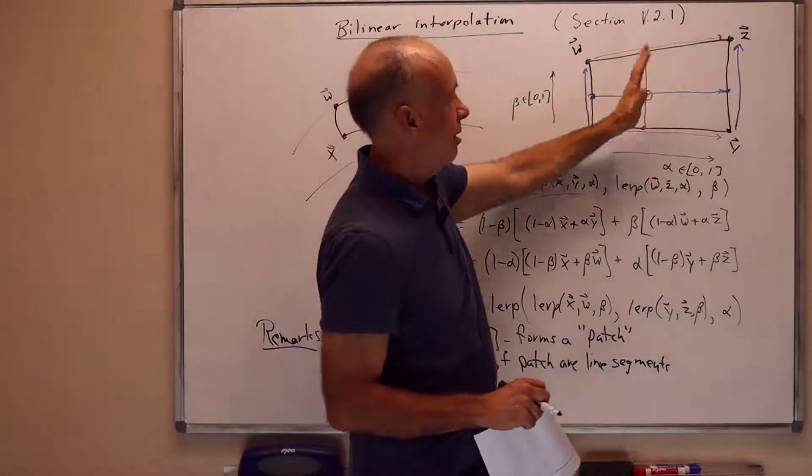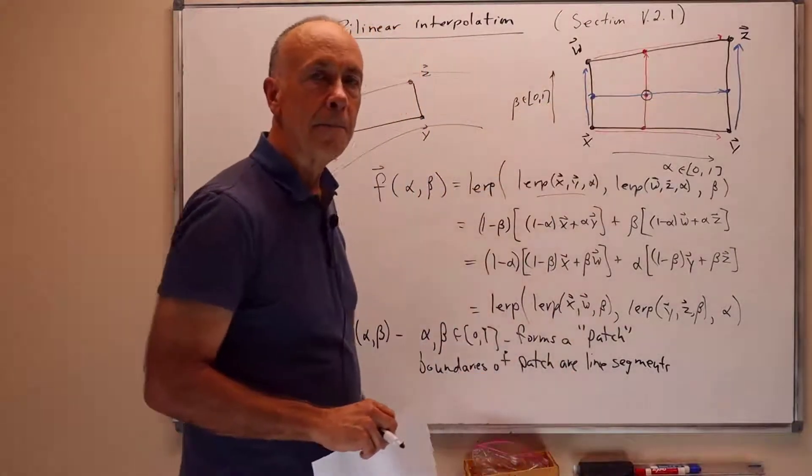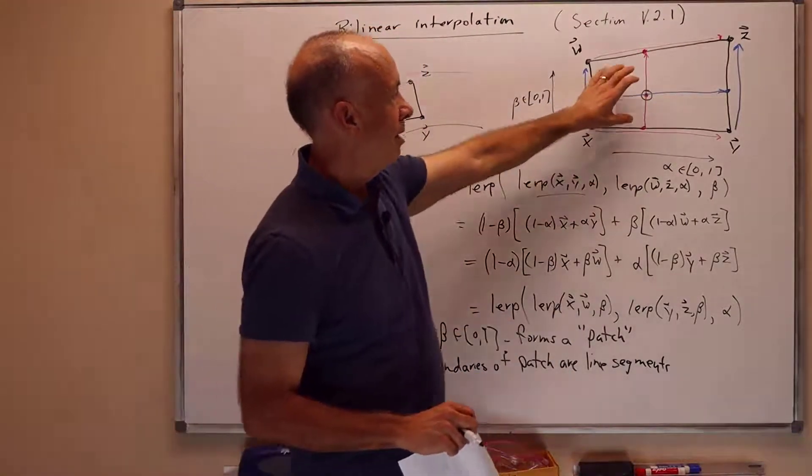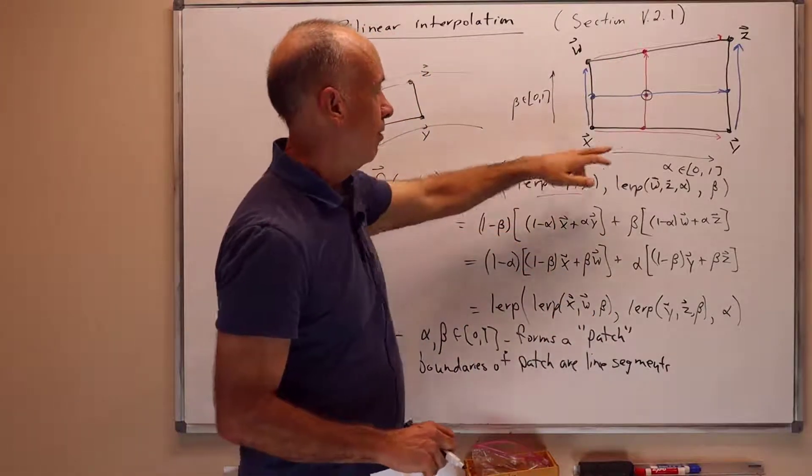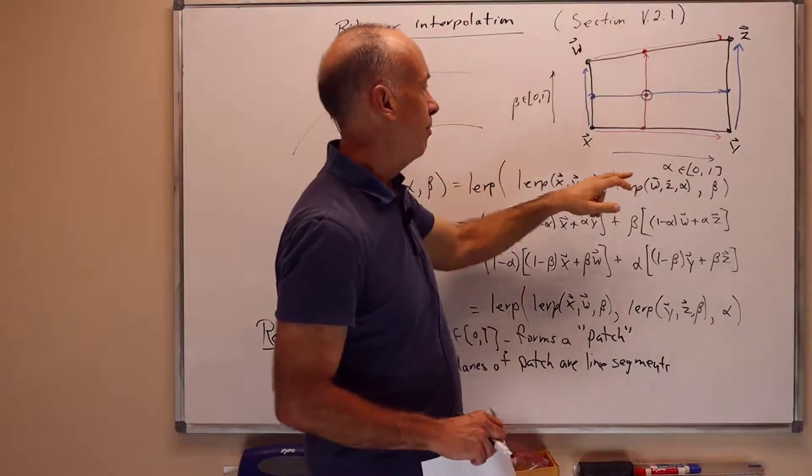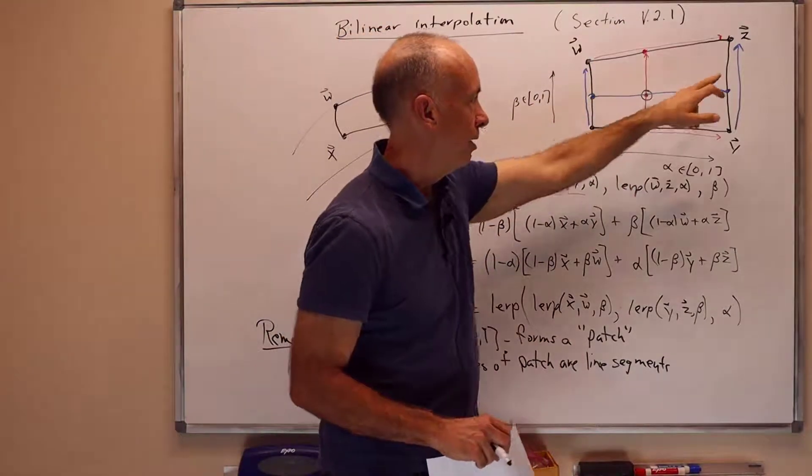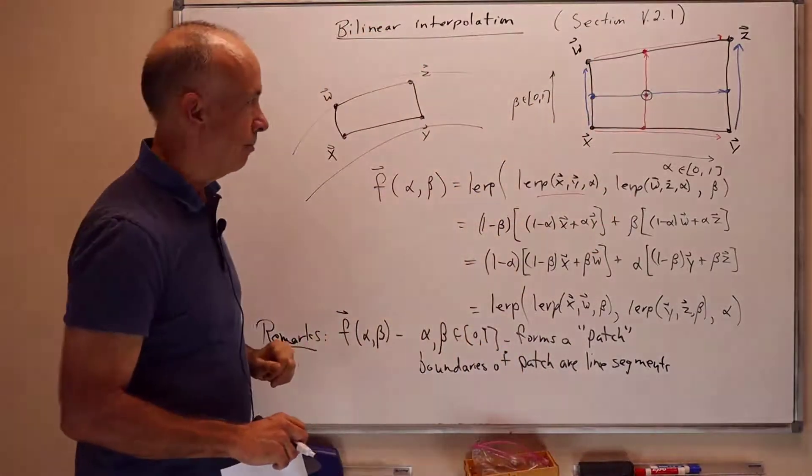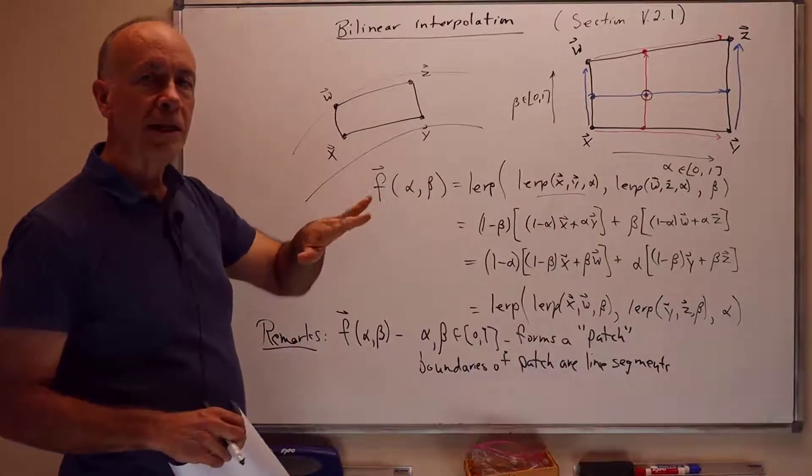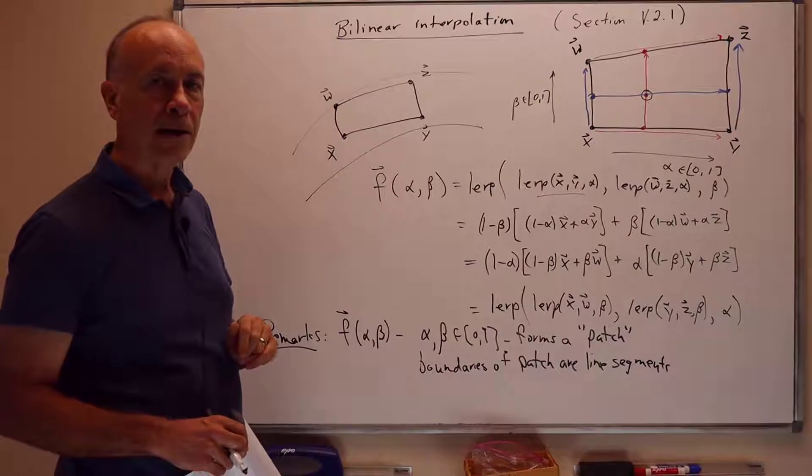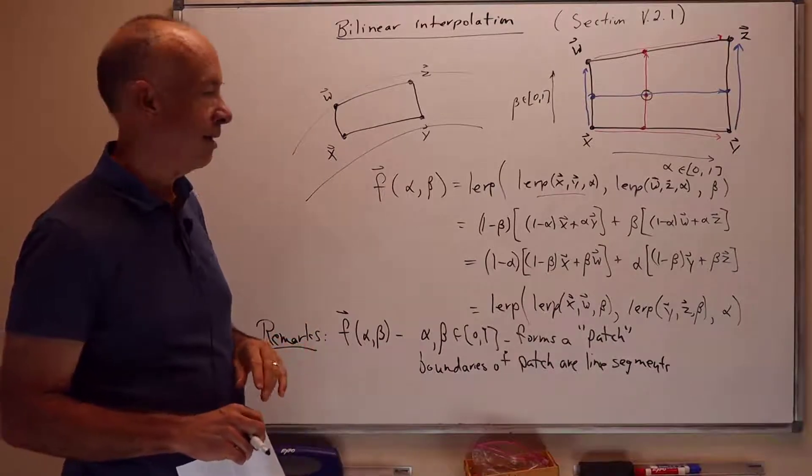Furthermore, these cross-sectional pieces are also lines. So the cross-sectional pieces, like the line I drew here in red, it's just a LERPing. Once alpha is fixed, you're LERPing from the bottom point to the top point. Or when beta is fixed, you're LERPing from the left point to the right point along the blue line. So the cross-sections are also lines. But the surface itself overall is curved in spite of the fact it's got a lot of line segments embedded in it.